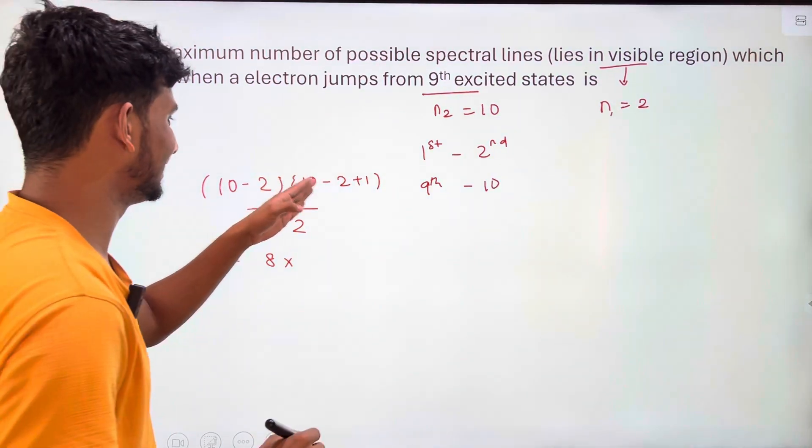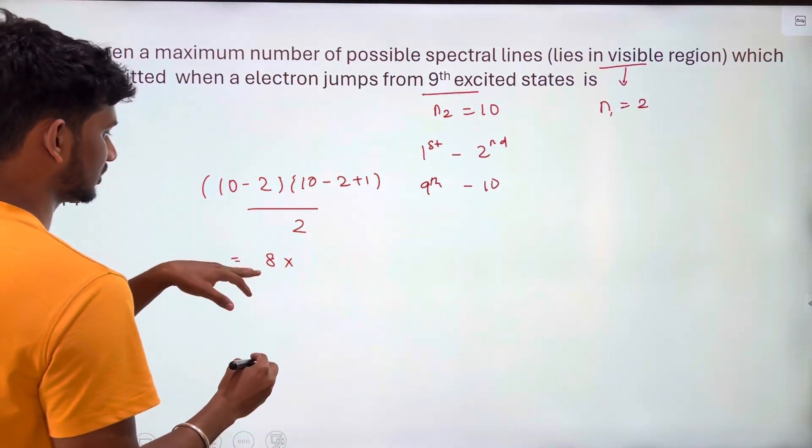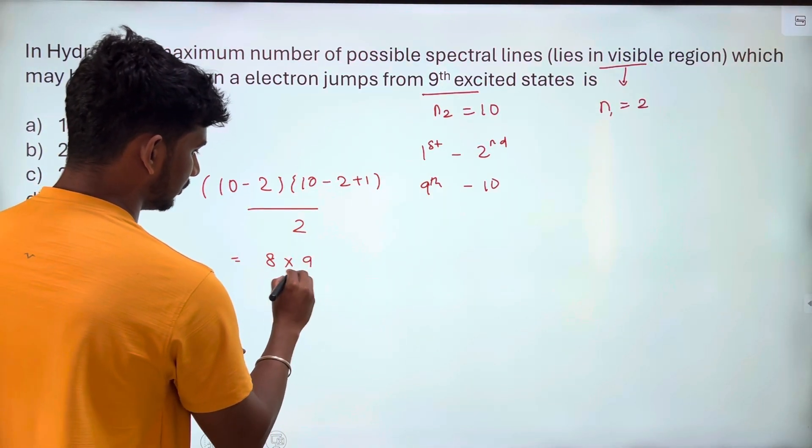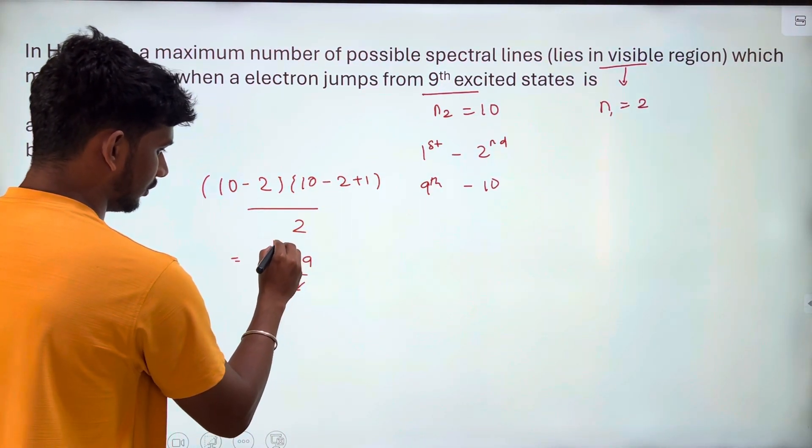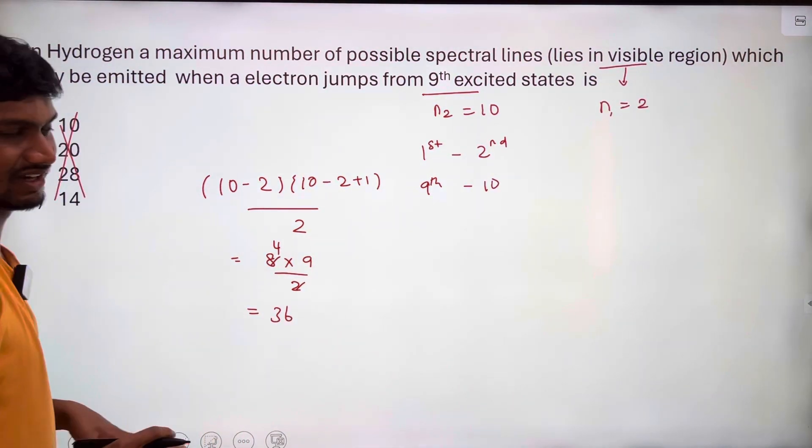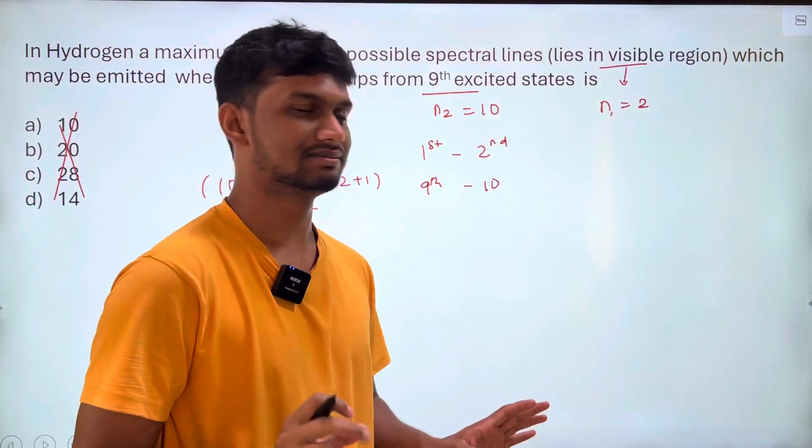n2 minus n1 into n2 minus n1 plus 1 by 2. 10 minus 2 is 8, 10 minus 2 plus 1 is 9, 8 into 9 by 2, 4 times 9 is 36. So the answer is 36.